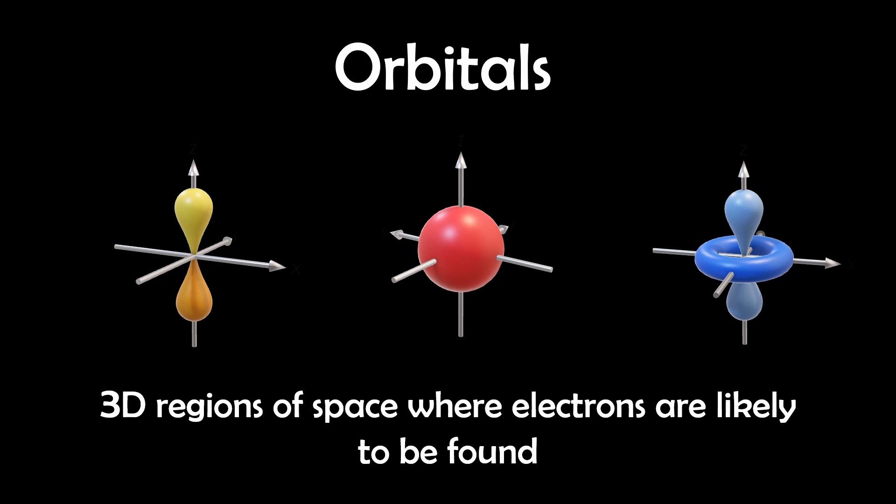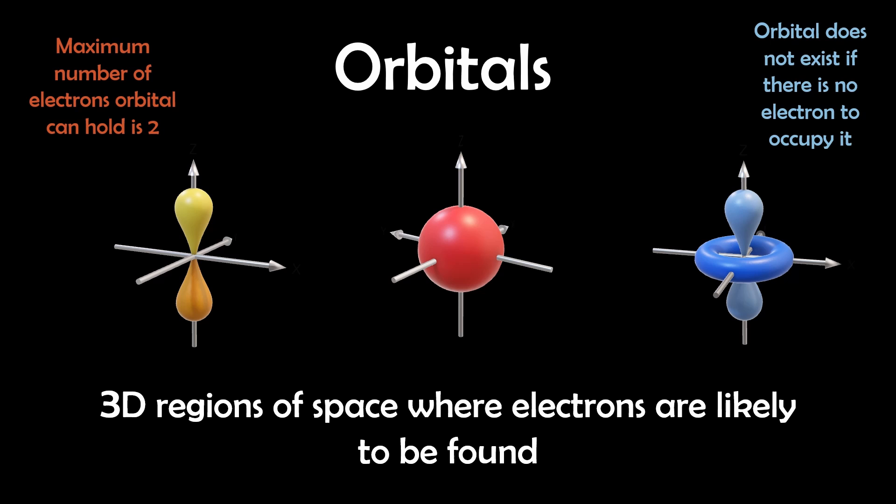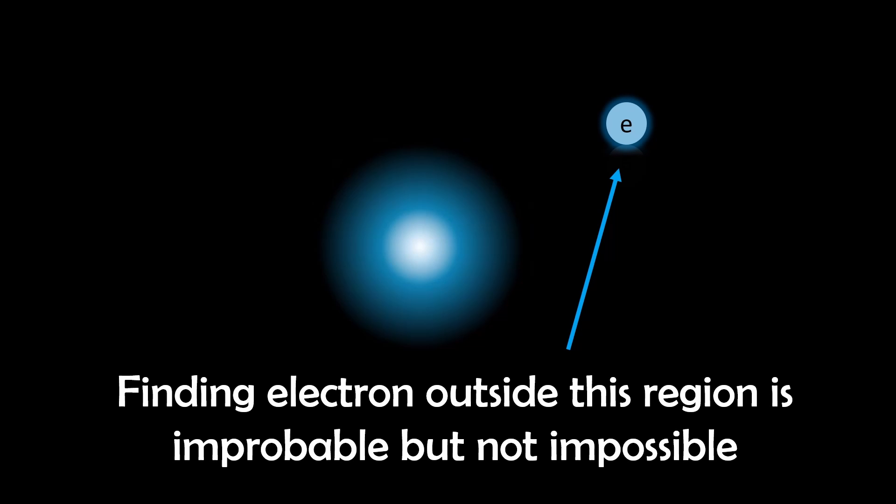Each orbital can host up to two electrons, and these orbitals only exist if they are occupied by electrons. They are energetically favorable locations for electrons, so finding an electron outside these orbitals is highly improbable due to electron energy constraints, but it's not impossible.